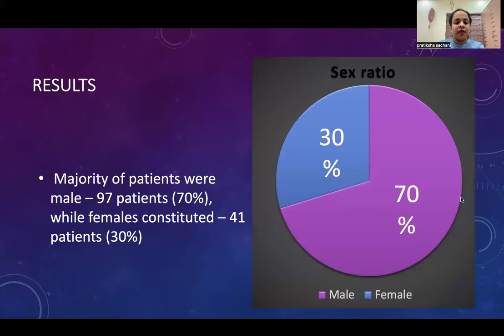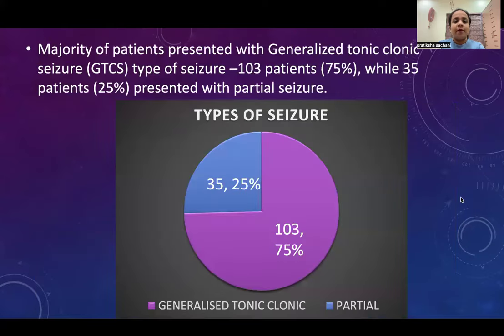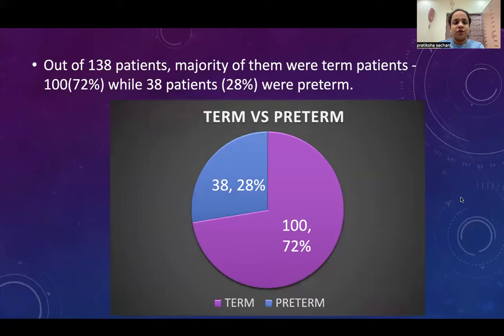Results: Majority of the patients were male, that is 70%, and 30% were female. With respect to age distribution, majority of patients were in the age group of 0 to 3 years, which were 48%, followed by 4 to 6 years, which were 21%. Majority of the patients presented with GTCS type of seizure, which was 75%, while 25% presented with partial seizures. Out of 138 patients, majority were term deliveries at 72%, and 28% were preterm.